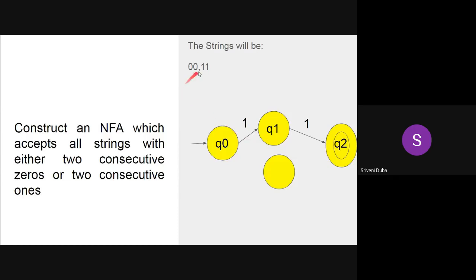There is also a possibility of having two zeros. So once again we are following another path. In this path we will be transitioning on 0 to the next state q3, and once again we will be transitioning to the final state on input symbol 0. So here we have exactly two ones and exactly two zeros, and we reached the final state. So now strings with either 00 or 11 are accepted.